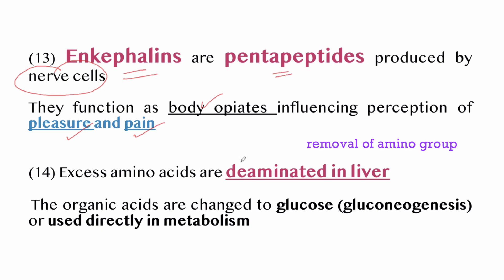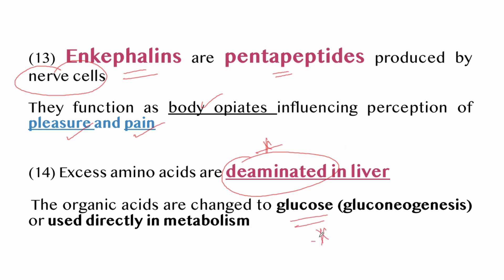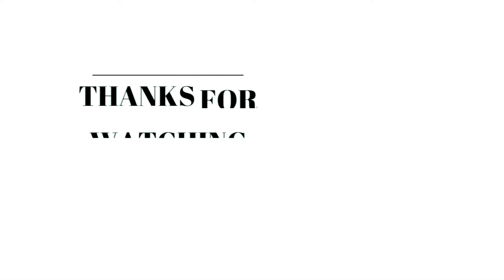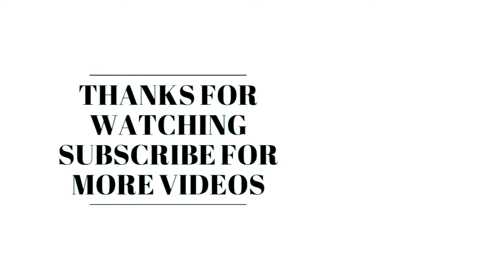Encephalins and pentapeptides are produced by nerve cells and function as body opiates, influencing the perception of pleasure and pain. Excess amino acids are deaminated in the liver — a very important point. The resulting organic acids are changed to glucose through a process known as gluconeogenesis, or they are directly used in metabolism. Both deamination and gluconeogenesis occur in the liver.